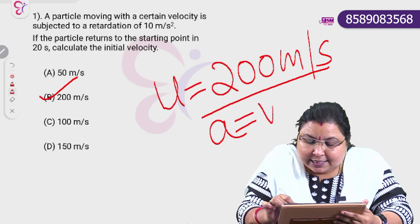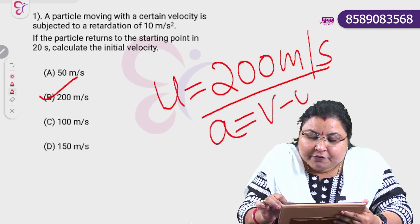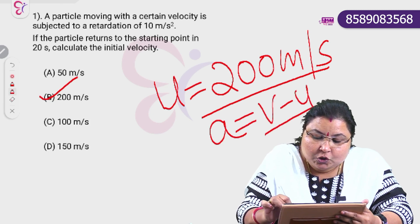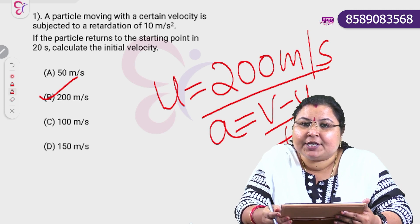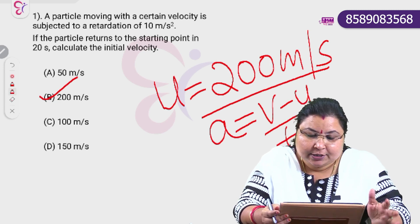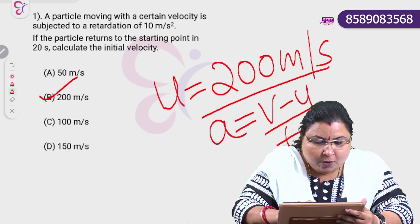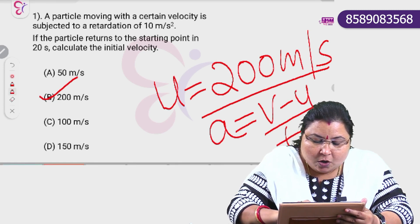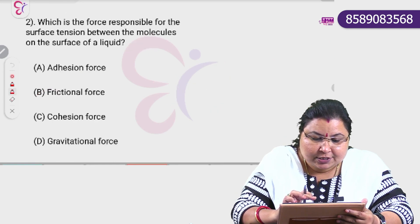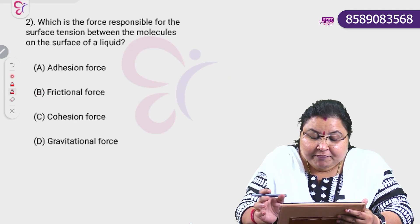The formula is: acceleration A is equal to V minus U divided by T. Going to the next question — second question.